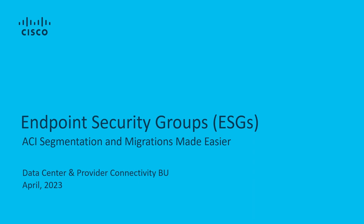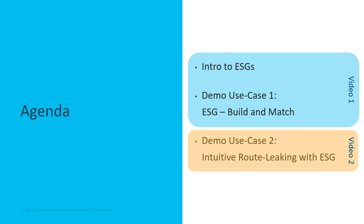In this video I want to introduce you to the concept of Endpoint Security Groups, so ESGs. They make Cisco ACI segmentation designs and configurations easier. ESG is a broad topic, so we will cover it in two separate videos. In this first part, I will briefly explain ESGs and their benefits, and additionally I will demonstrate the first use case of building and matching with ESG.